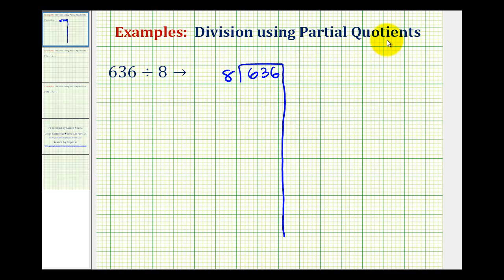To start the method of partial quotients, the idea is to find a simple product that involves eight that is as close as we can to 636, but less than 636. So for example, eight times 10 would be 80, but that product is a lot smaller than 636. Well eight times 100 would be 800, but 800 is too big because it's greater than 636. So we should be able to recognize that if eight times 100 is 800, then eight times 50 would be equal to 400, which is much closer to 636.